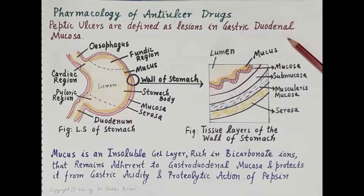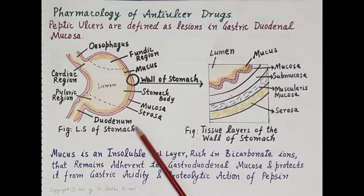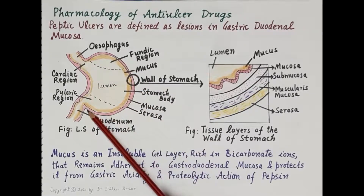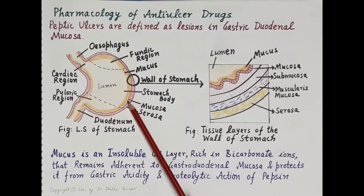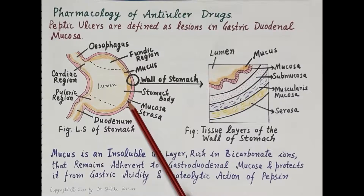Peptic ulcers are defined as lesions in the gastroduodenal mucosa. The mucosa refers to the innermost lining of the wall of the stomach and duodenum. This diagram shows the gross structure of the stomach wall, shown here in pink, with the innermost lining called the mucosa.